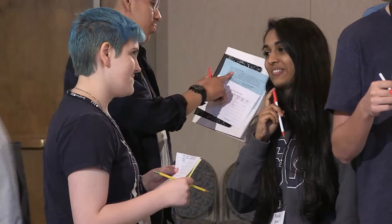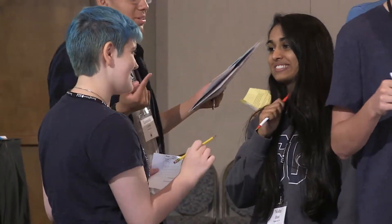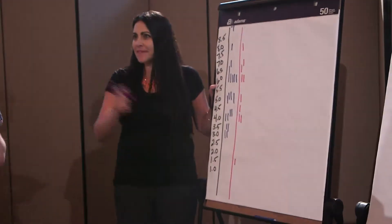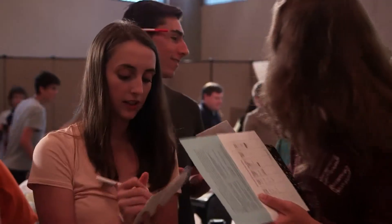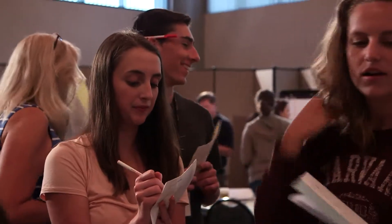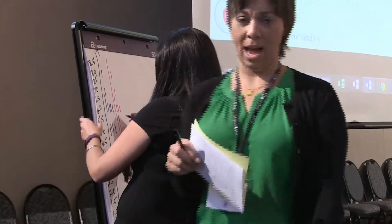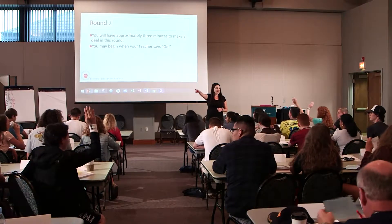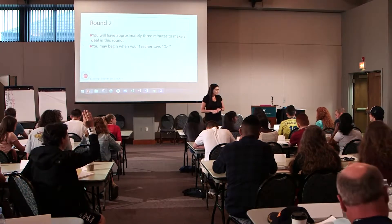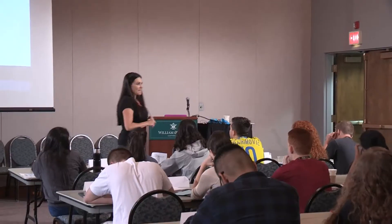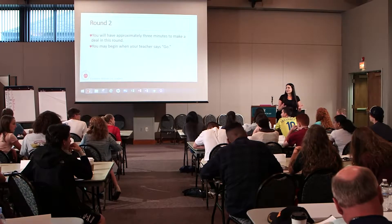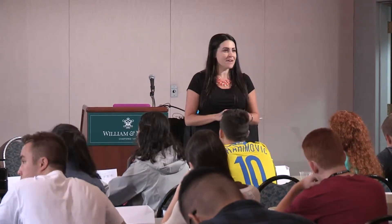With about 60 seconds left in the round, contracts are being reported: five years, six years. At the end of the round, ask who wasn't able to get a contract and why. A student responds that there weren't enough skilled workers. Confirm: you were looking for skilled workers this time. Check whether any skilled workers couldn't find transportation to the new world.